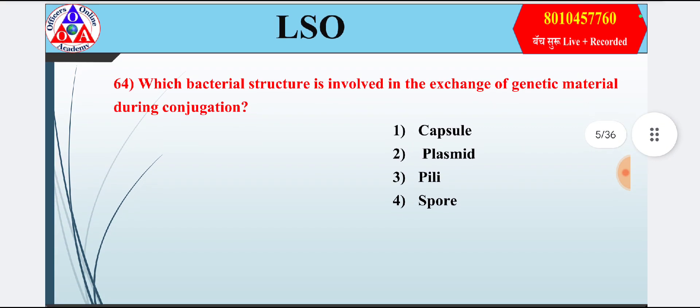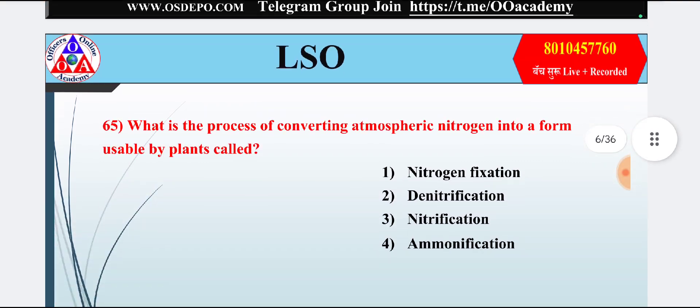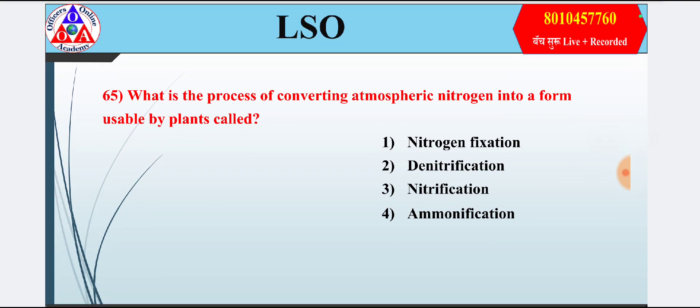Question 4: Which bacterial structure is involved in exchange of genetic material during conjugation? Option 1: capsule; option 2: plasmid; option 3: pili; option 4: spore. Answer is option 3 — pili.